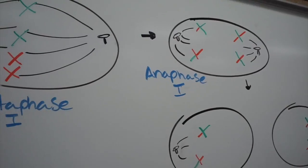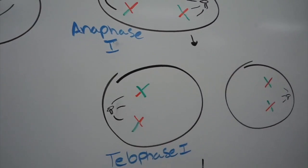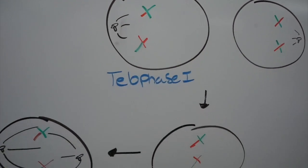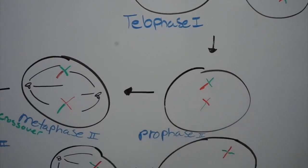So when we go through telophase 1, we're back to being diploid with unique chromosomes. Now you skip interphase, because we do not want to double our information.